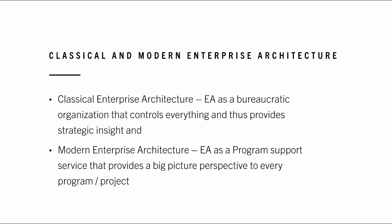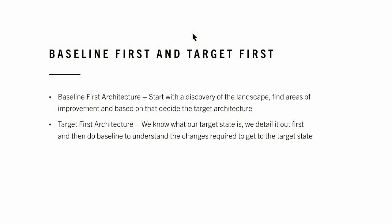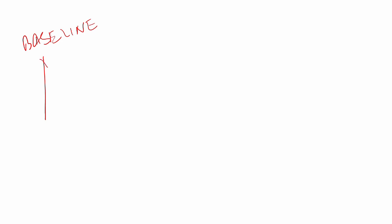In the original classical enterprise architecture, they had two concepts: baseline first architecture and target first architecture. Baseline first architecture is where we evaluate the entire landscape and try to find the problems within the organization — where processes are not efficient or are convoluted, where there are redundant business functions, or where there are better, more effective ways of doing things. We also look at data redundancies and application redundancies where we can standardize applications across the organization.